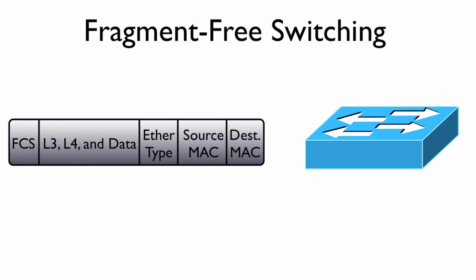We could almost consider fragment-free switching as a compromise between cut-through switching and store-and-forward switching. One of the big benefits of cut-through switching was that the switch didn't have to see the entire frame before it started to forward it out towards its destination. However, it didn't check to see if it was valid or not — maybe a collision had occurred, or maybe the frame check sequence didn't match up.